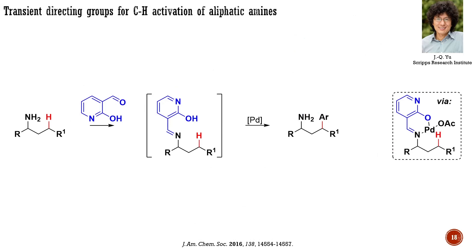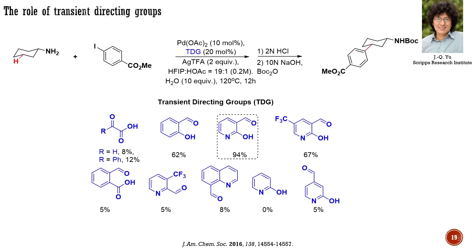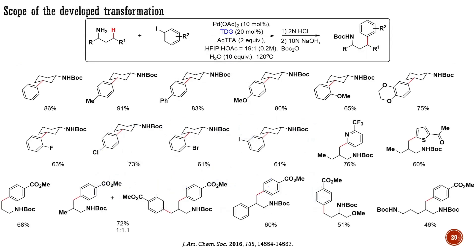The group led by Yu was among the first to extend this strategy to aliphatic systems. For aliphatic primary amines, they identified a suitable transient directing group based on aldehydes, enabling the palladium-catalyzed C-H halogenation described here. This C-H halogenation worked with palladium-based catalysts combined with silver salts used in stoichiometric quantities. Among the screened transient directing groups, a pyridine derivative showed the best results. The scope of the reaction includes both cyclic and acyclic amines. After the C-H halogenation step, the amino group was protected to facilitate the separation process.